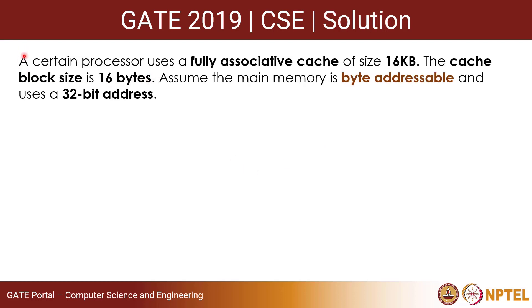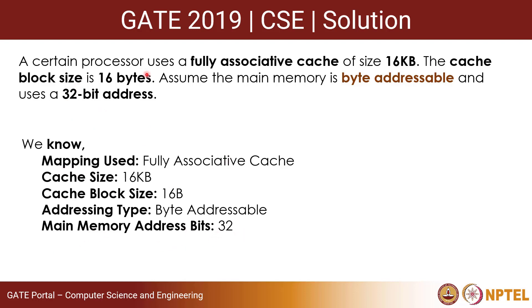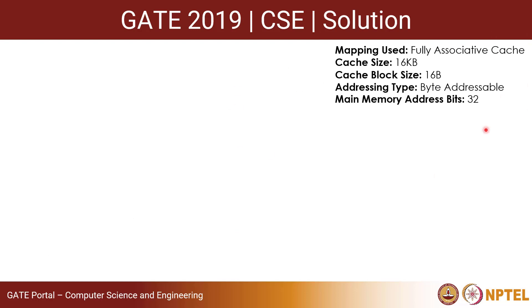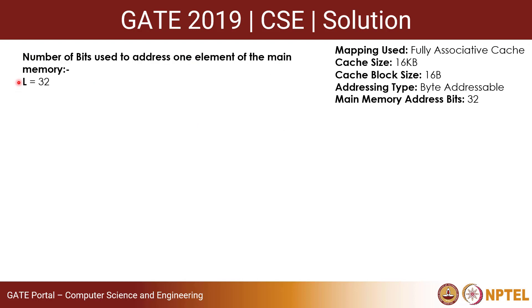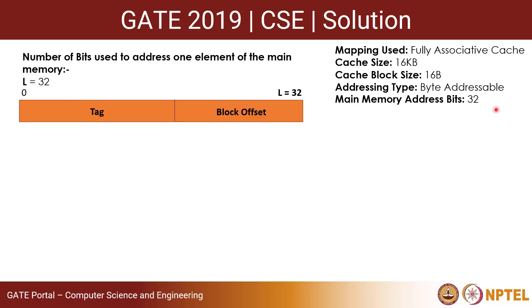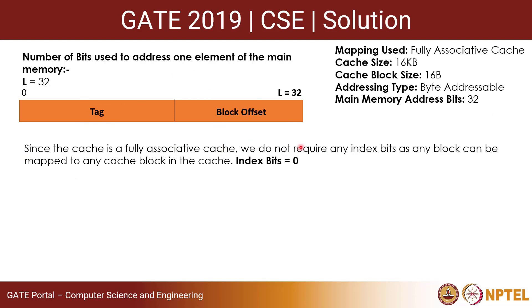Now let us solve the question. The mapping used is fully associative, cache size is 16 KB, cache block size is 16 bytes, main memory is byte addressable, and uses a 32-bit address. The number of bits to address one element in main memory is 32. Since it is a fully associative cache, the address has only two fields: tag and block offset. There is no index field, so the index bits are 0.